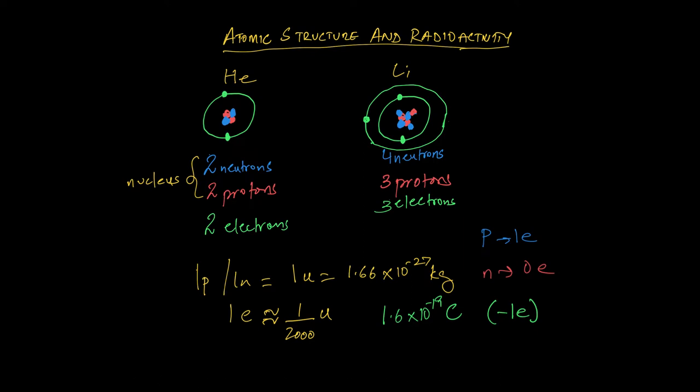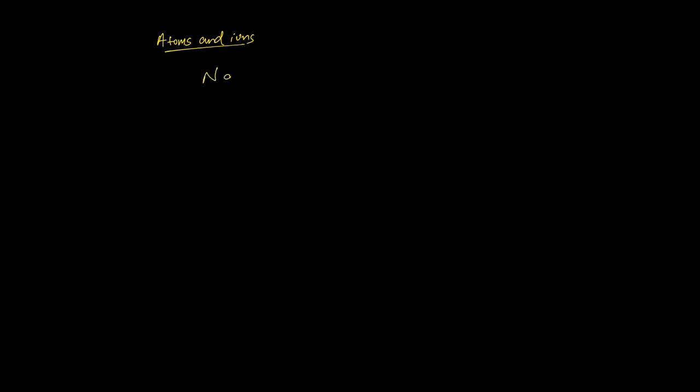This is what the structure of the nucleus looks like. Atoms are uncharged because they contain an equal number of protons and electrons, and the charges are equal and opposite. If an atom loses one or more electrons such that it no longer has an equal number of protons and electrons, it becomes charged and is called an ion. For example, if a sodium atom loses an electron, the atom becomes a sodium ion.